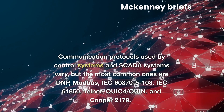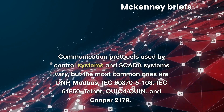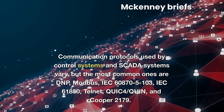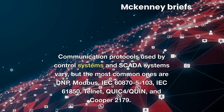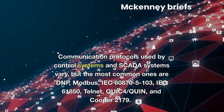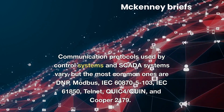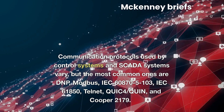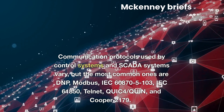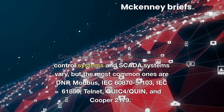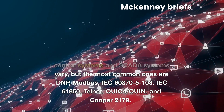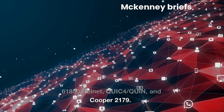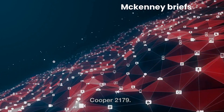Communication protocols used by control systems and SCADA systems vary, but the most common ones are DNP, Modbus, IEC 60870-5103, IEC 61850, Telnet, QUIC4, and Cooper 2179. Compromising any of these protocols would allow a malicious party to control these systems outside of utility operations.